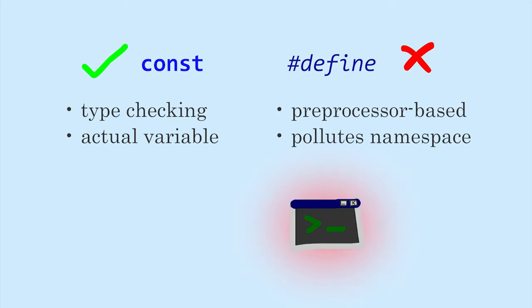Macro defines are preprocessor based. This means debugging will not always show you what you expect to see, and errors can occur before your program even compiles. Macro defines also pollute the global namespace.